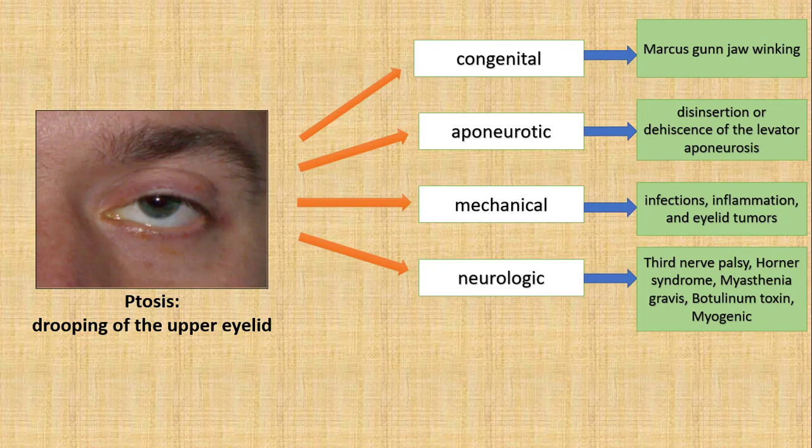To confirm Horner syndrome and distinguish it from pharmacological causes, we use cocaine or apraclonidine drops and measure the change in the pupil. By this test we can confirm Horner syndrome or identify pharmacological causes. Cocaine blocks the reuptake of norepinephrine at the sympathetic nerve synapses and causes pupillary dilation in eyes with intact sympathetic innervation.